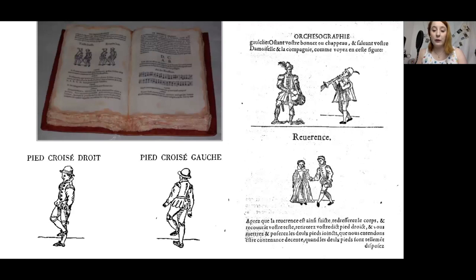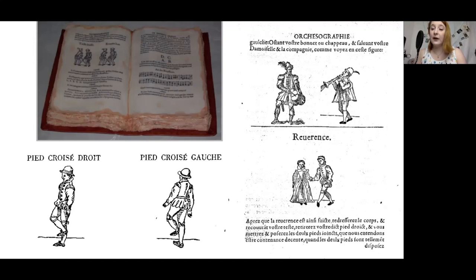It is during this period that dance also became more international. Catherine de Medici introduced the works of Italian dancing masters to France on her marriage, whilst Mary Queen of Scots then introduced these Italian and French styles into Scotland when she returned there from the French court. It should be mentioned that during this time earlier forms of dance such as the chorole were still being danced at both the court and in the country.